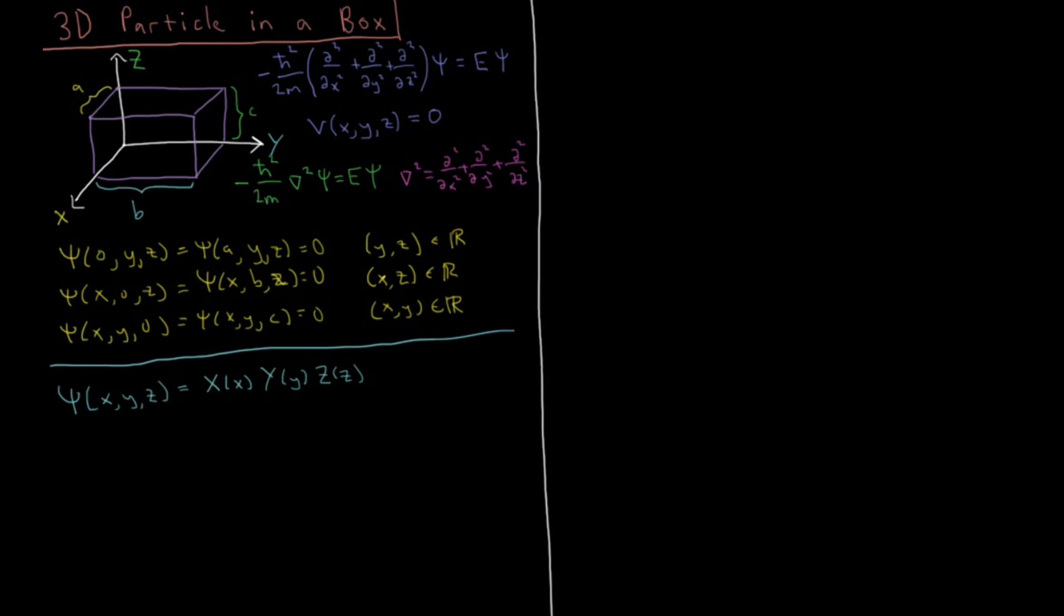So when we have this situation, then our total Schrodinger equation, our total Hamiltonian, is going to break down into three cases. For the x case, we have minus h-bar squared over 2m, and this is an ordinary derivative now because it only depends on x, second with respect to x, equals e-x, the function of x. And this is the same as we had for the case of a one-dimensional particle.